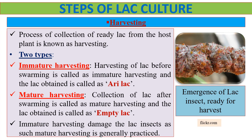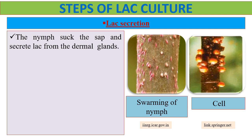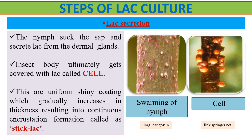The second step of lac culture is lac secretion. After the nymph settles on new branches, it sucks the sap and secretes lac from the dermal glands. The insect body ultimately gets covered with lac, called a cell. These are uniform shiny coatings which gradually increase in thickness, resulting in continuous encrustation formation called stick lac. On the other side, we can see the picture of swarming of nymphs and cells.